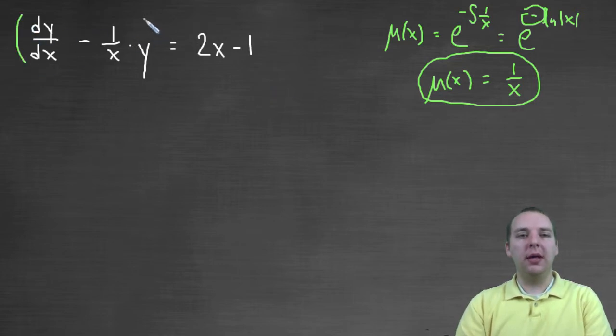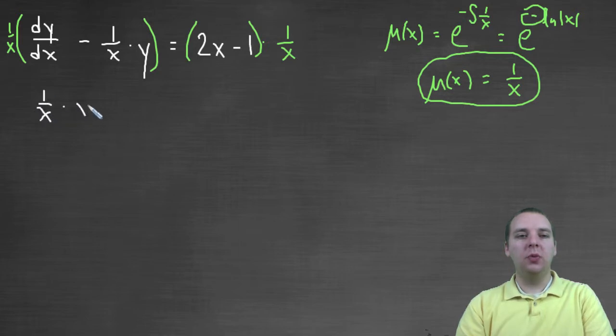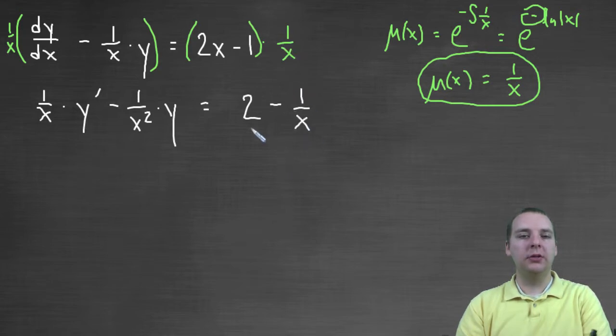So what we're going to do is we're going to multiply this guy to the left side and the right side of this differential equation. Times one over x to both sides of the differential equation. Let's see what this turns out to be. The left hand side would be one over x times y prime minus one over x squared, that's one over x times one over x times y, equals two x times one over x is two, and minus one over x times one. So we get this right here.